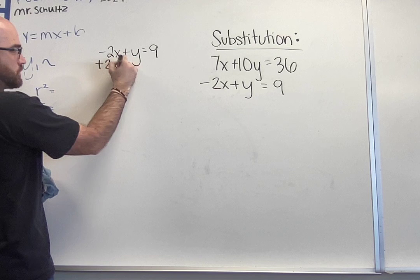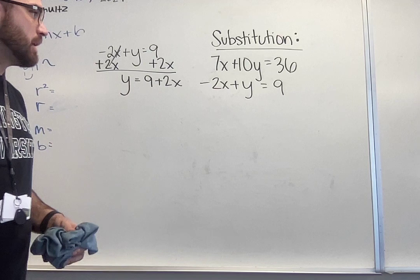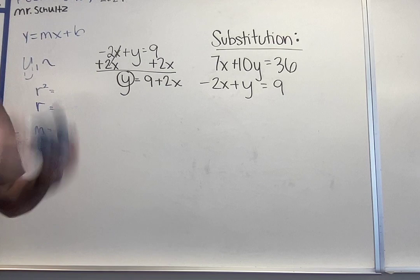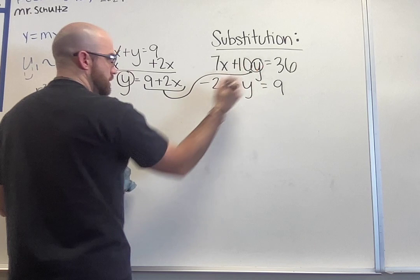I now have my y by itself. That's the goal, to have one variable by itself so I can substitute it in to my other problem. I have to plug it into the other problem. I can't plug it back into the same problem. If I do that it ends up getting 0 equals 0, everything just completely cancels out. So I'm going to plug this y over here, replace it in our other problem. It's equal to 9 plus 2x so that is what I'm plugging in for the y value.